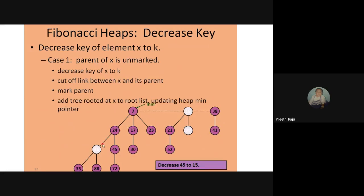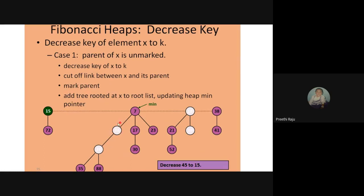The second case: the parent of x is unmarked. If I change 45 to 15, the property is violated because 24 (the parent) is greater than 15. In this case, we cut off the link between 15 and its parent 24, mark the parent 24 (because it has lost a child), and bring 15 to the root list. Then update the min pointer — since 7 is still smaller, 7 remains the minimum.